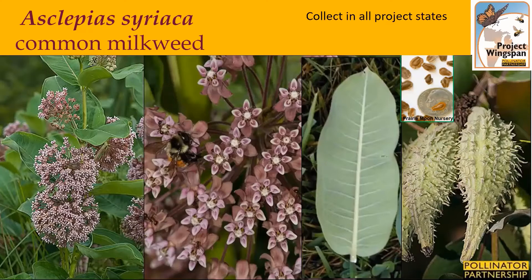Asclepias syriaca, or common milkweed, as the name implies, grows in many different environments. It lacks disturbance, which is why it's associated with fields and roadsides. Individual plants have a single stem and most often will be found growing in clusters as it reproduces by root. The plants can grow up to six and a half feet tall. The leaf arrangement is opposite, with broadly ovate to elliptical leaves on short petioles about three to seven inches long. The flowers are round, humble clusters with 20 to 30 small pink-white flowers per cluster, blooming from June through August. The fruit are plump, tear-shaped pods with a warty surface that turn gray to golden brown when ripe.